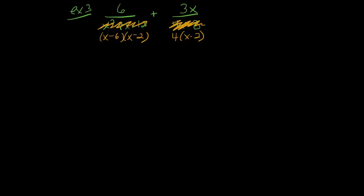Notice they have a common factor already of x minus 2. So that part is already taken care of. Now we have to make sure that they both have a factor of x minus 6. Ah, this one does and this one doesn't. So let's make sure that this one gets that. So I multiply both the numerator and denominator by x minus 6. This one has a factor of 4, this one does not. So let's multiply this by 4 over 4.